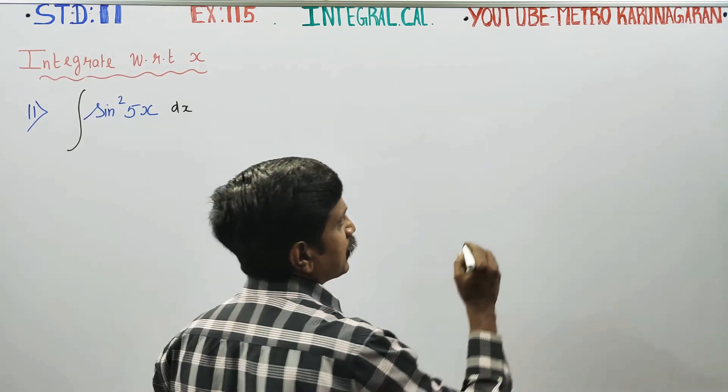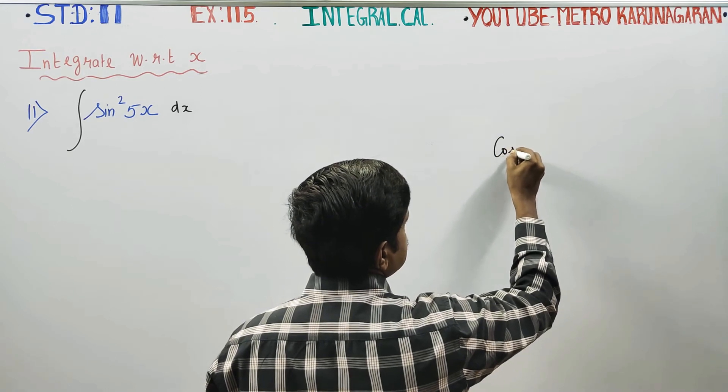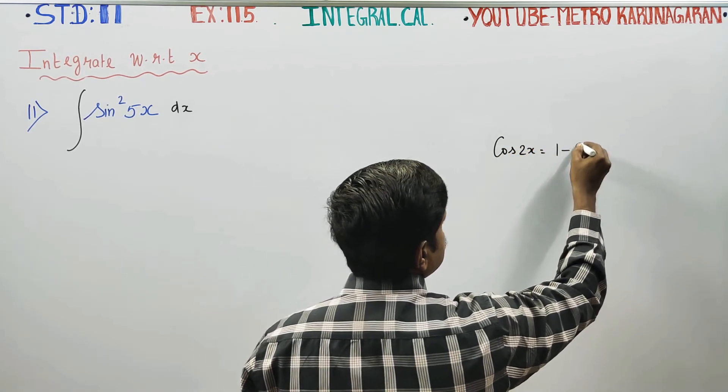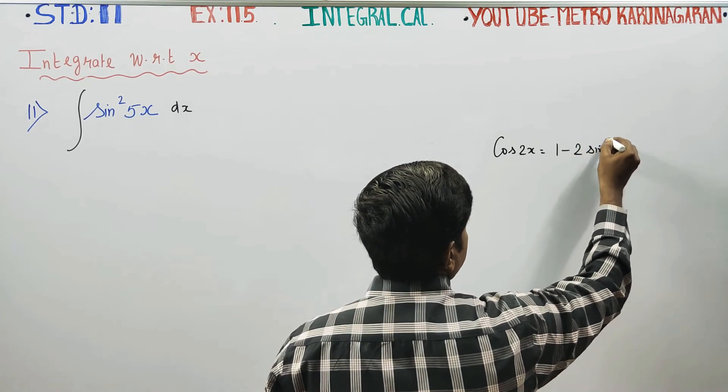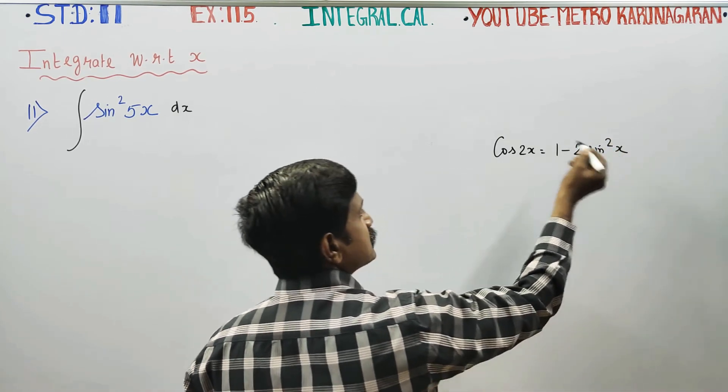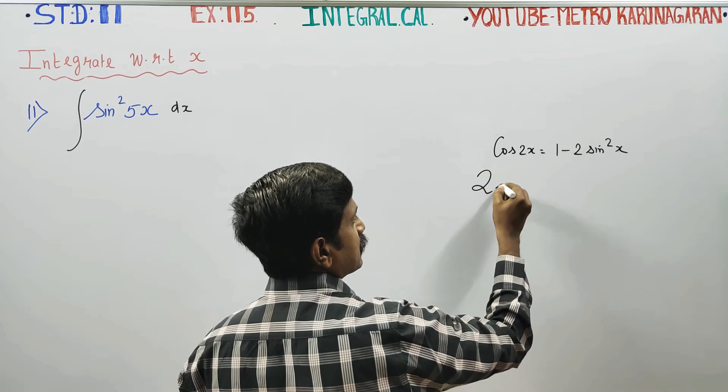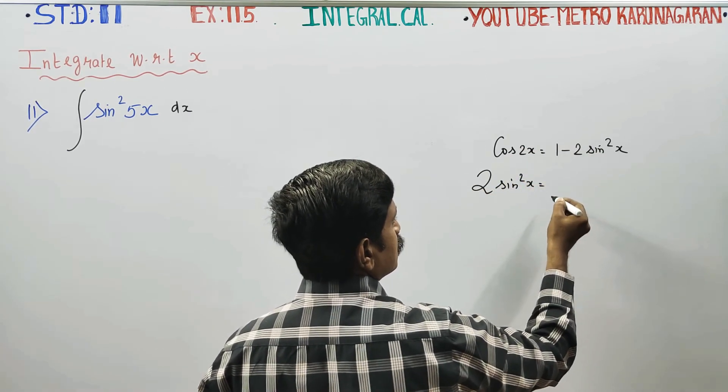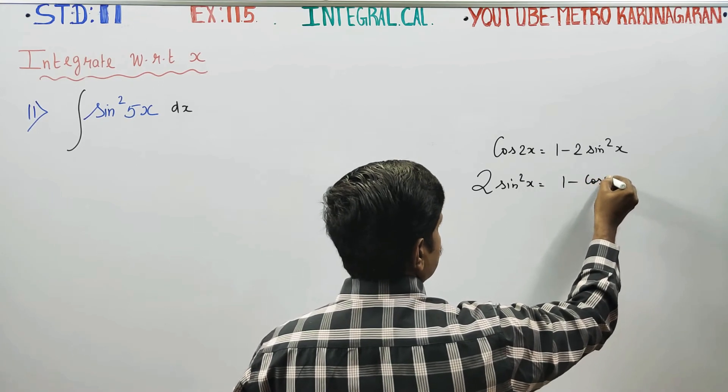We'll do double angle formula. Cos 2x is equal to 1 minus 2 sin square x. Abdi nop form law on the panna kudadh. Sin square x, 2 sin square x is equal to 1 minus cos 2x.